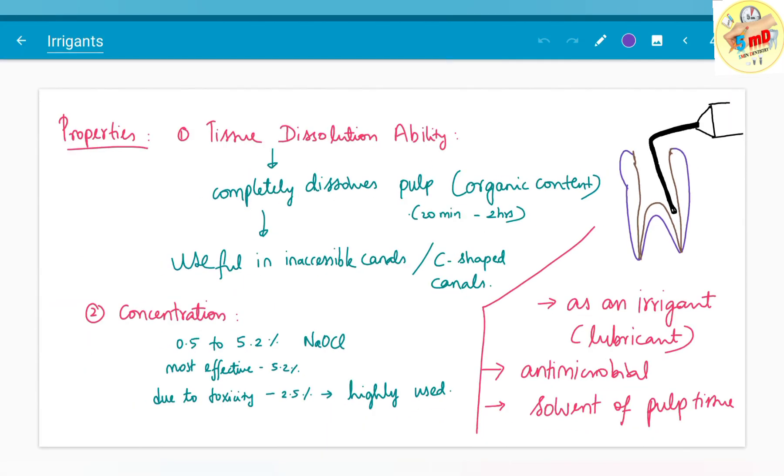Apart from antimicrobial property, tissue dissolution ability is important. It completely dissolves pulp, the organic content, within 20 minutes to 2 hours. This is the most important feature and is useful in inaccessible canals and C-shaped canals where instrumentation cannot be relied upon fully.